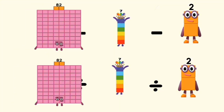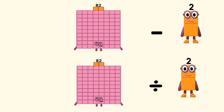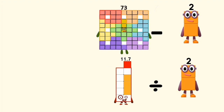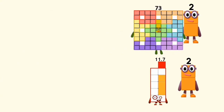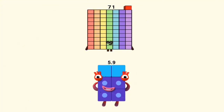82 minus and divided by 7 equals 73 and 11.7. 73 minus 2 and 11.7 divided by 2 equals 71 and 5.9.